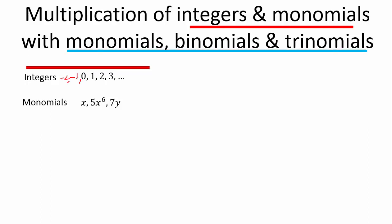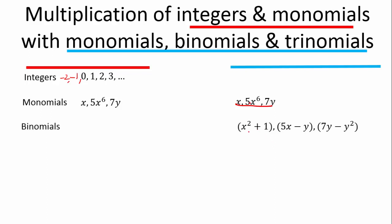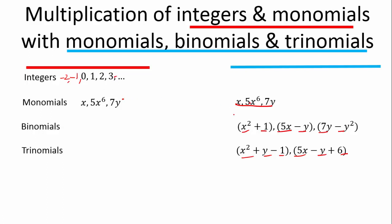So we're going to multiply integers with monomials, binomials, and trinomials. No longer just integers — we're going to multiply monomials, which are single terms, with binomials. Binomials are two separate unlike terms, because we can't simplify them any further — for example y and y squared, or y and x are all unlike terms. Trinomials have three terms, like x squared, y — all unlike terms, otherwise we would have simplified them. So we're multiplying expressions like these with each other.